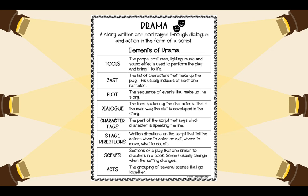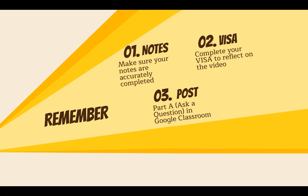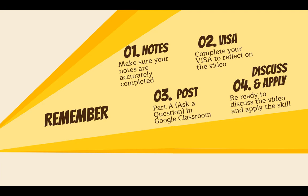You should have your note taker filled out by now with the definition of drama and the elements of drama. Remember that if you're reading a play as a reader rather than an actor, it's important to know what the character tags are so you can visualize when one character is speaking versus another. The stage directions are important to help you visualize what's happening in the story, but plays are also fun to act out. Make sure your notes are accurately completed, complete your visa to reflect on the video, post your Part A question in Google Classroom, and be ready to discuss and apply the skills — you'll be able to analyze a play and identify its different parts.